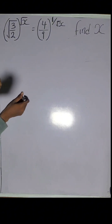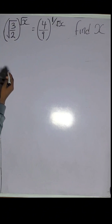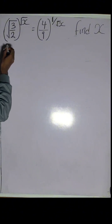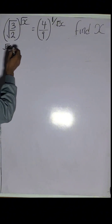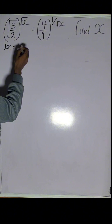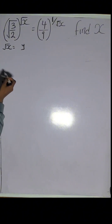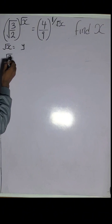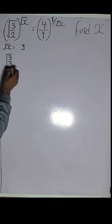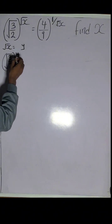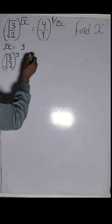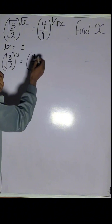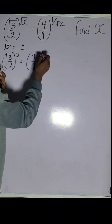The first important step is to set root x equal to a letter, maybe y. So the equation can be rewritten as: square root of 3 all over 2, raised to the power of y, equals 4 all over 9, raised to the power of 1 over y.